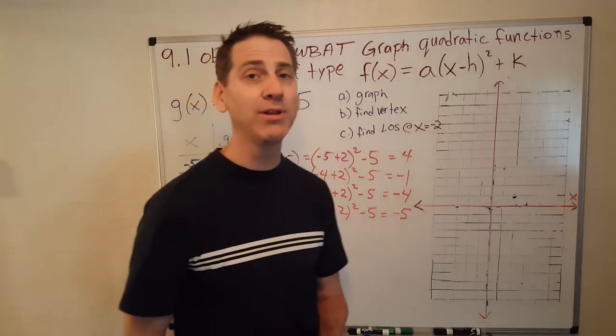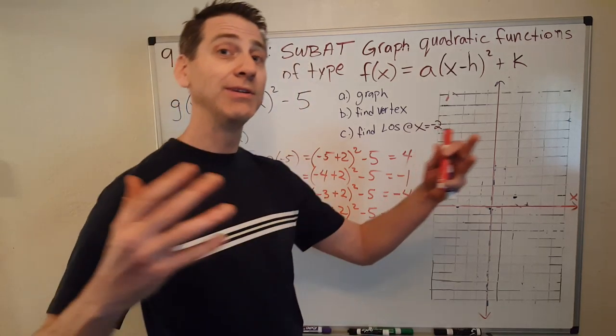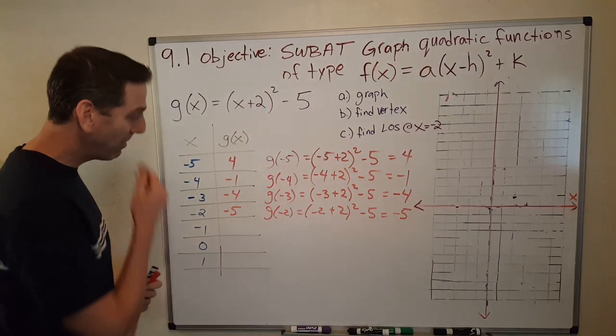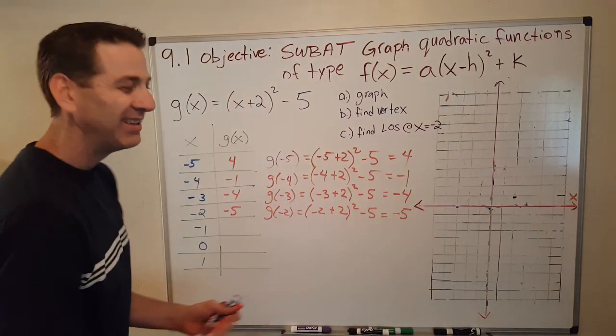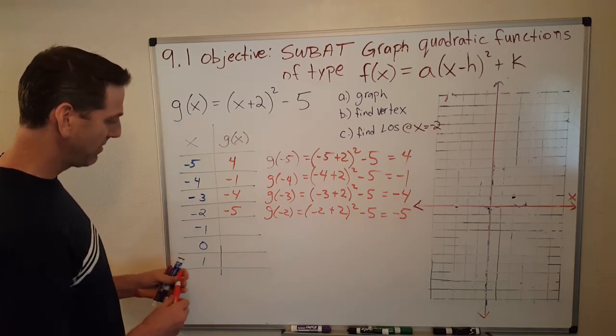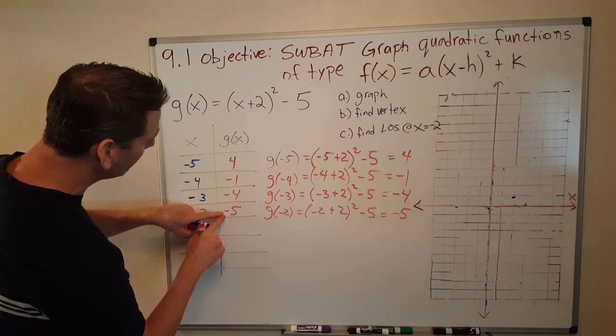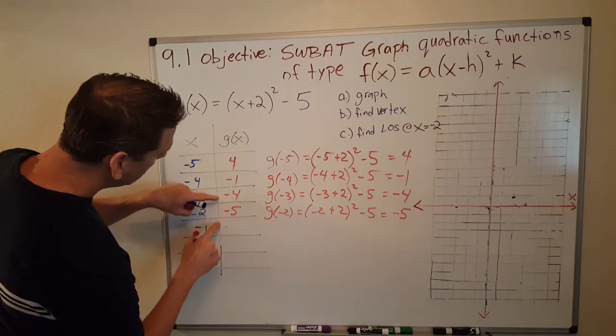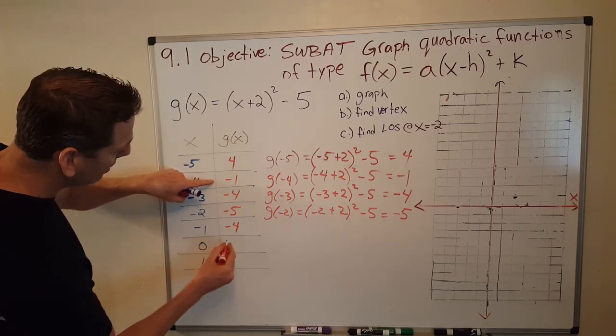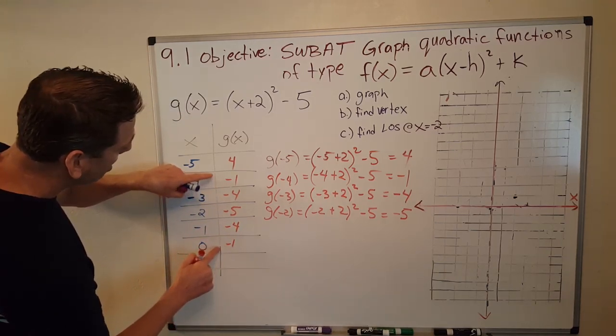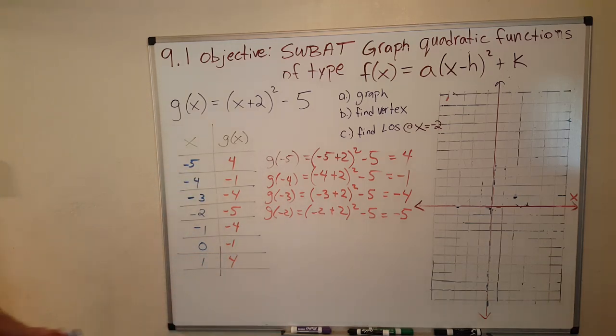Okay, so remember I said that the parabola is symmetrical about its line of symmetry. That's why it's called the line of symmetry. Alright, so that means we should be able to get these values in without having to do all this mathematics. I mean, we could, but this is kind of a shortcut. Okay, so we've got 4, negative 1, negative 4, negative 5. This is going to be negative 4, negative 1, 4. See that? It's a lot quicker.